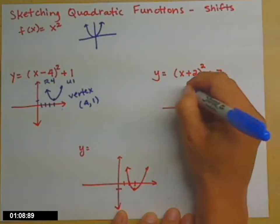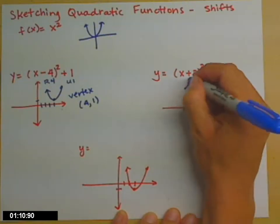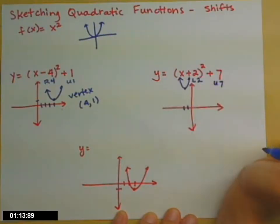So left 2, up 7. And then sketch your parabola.